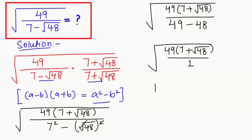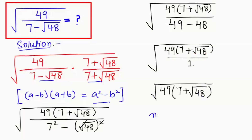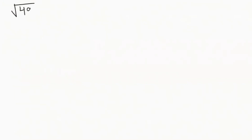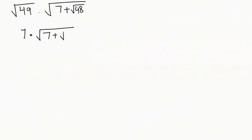So I can write this as root of 49 times the bracket (7 plus root of 48). Now I'm going to apply the radical rule that is the nth root of a times b can be written as the nth root of a times the nth root of b. Since the terms are under the same root, I write root of 49 times root of 7 plus root of 48. Root of 49 equals 7, so we get 7 times root of (7 plus root of 48).